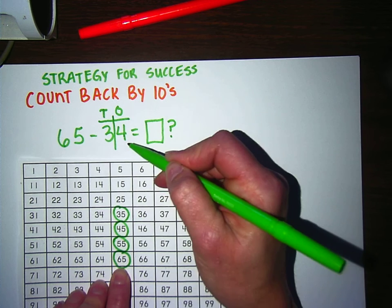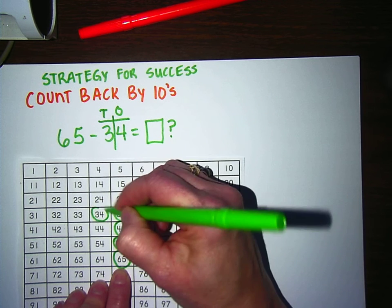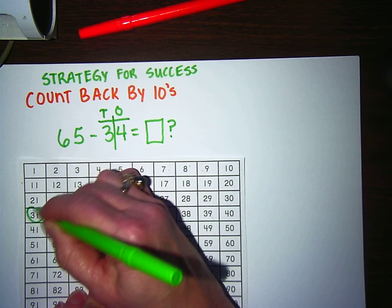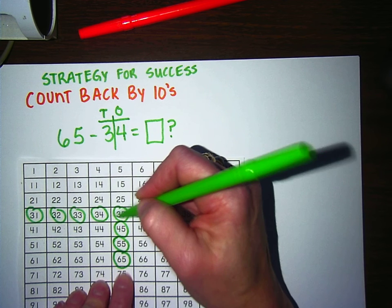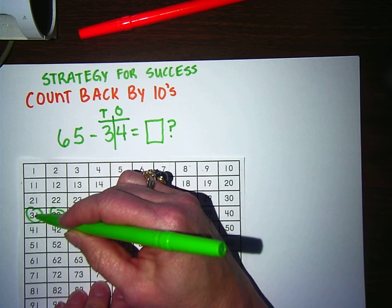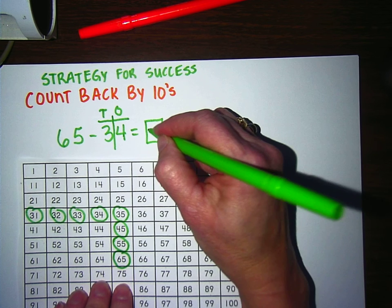Now I'm going to back up my ones. I'm going to go 1, 2, 3, 4. So I've gone from 35 to 34 to 33 to 32 to 31. So my answer is 31.